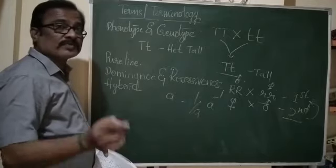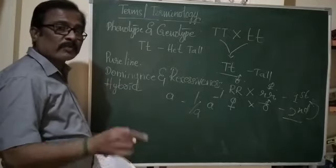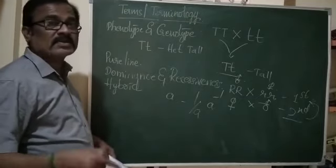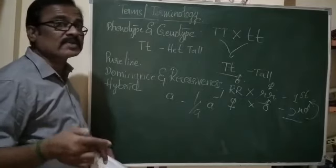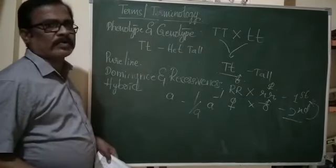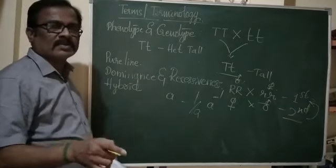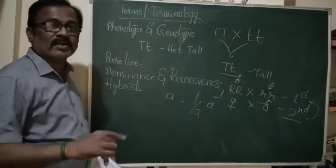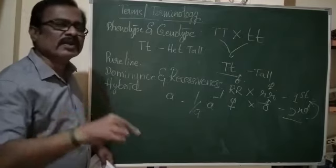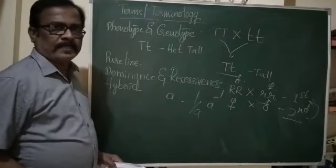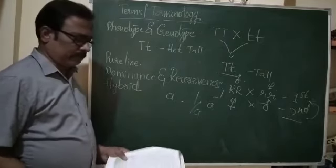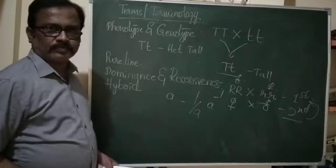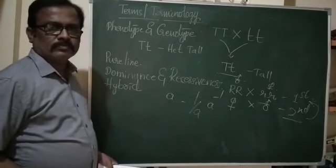In reciprocal cross, sexes are reversed — in the first cross, male and female are considered in one order, and in the reciprocal cross, their positions are reversed. The reciprocal cross is always marked opposite to the first crossing.